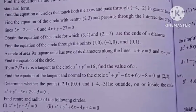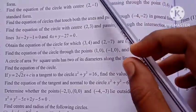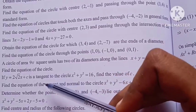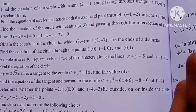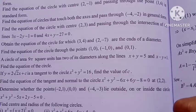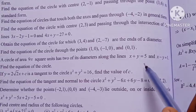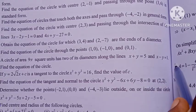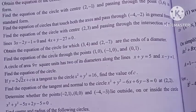Hi students, I am Bino. 12th Mark Chapter 5, Exercise 5.1, let's have the 7th question. A circle of area 9π square units has 2 of its diameters along the lines x plus y equals 5 and x minus y equals 1. Find the equation of the circle.